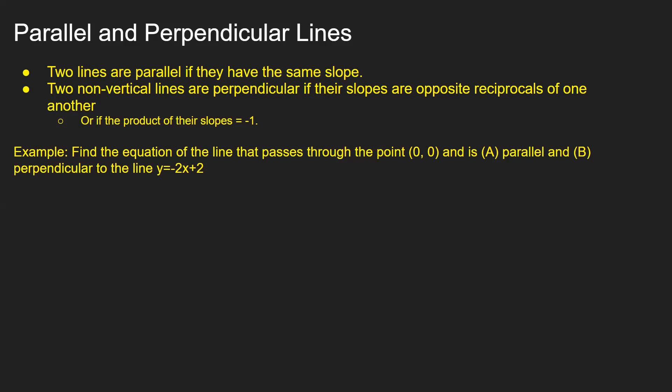Okay, for the parallel line, we know that the slope of this given line is -2, so the parallel line will have slope -2. The point is (0, 0). This is a great candidate for point-slope form because we know the point and the slope.